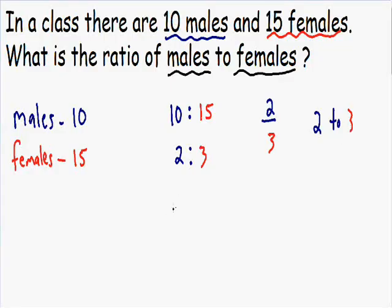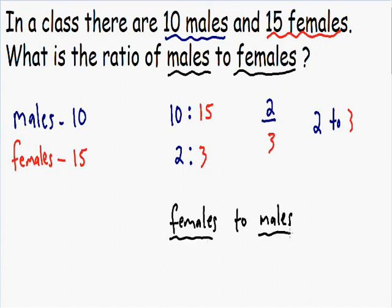Now let's talk about the ratio of females to males. Remember how the order matters. Notice how this time females is the first part of our ratio and males is the second — exactly the opposite. We know there are 3 females for every 2 males, so the ratio of females to males is 3 to 2.